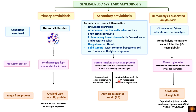In hemodialysis-associated amyloidosis, seen in chronic renal failure patients on long-term hemodialysis, the dialysis membrane does not filter beta-2 microglobulin — a component of the class 1 MHC molecule. Protein levels increase in the serum and beta-2 microglobulin gets deposited in different organs. The precursor protein is beta-2 microglobulin, leading to amyloid beta-2 microglobulin.